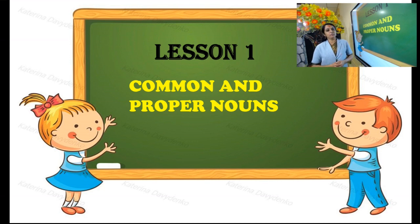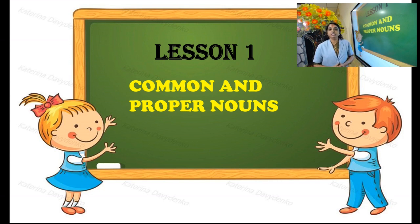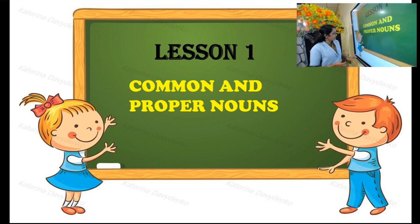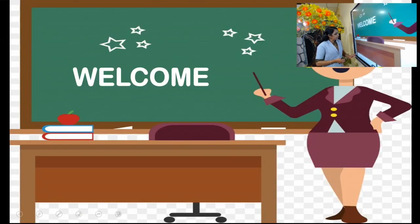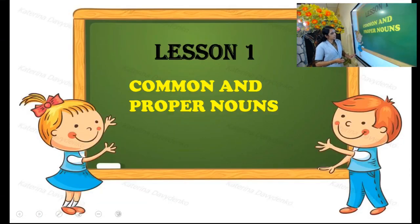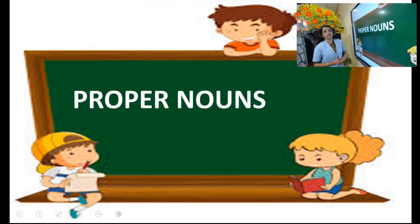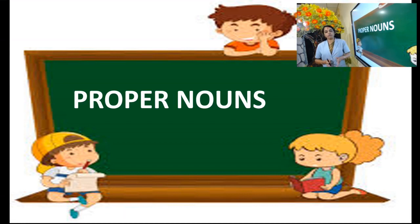So what is the naming word? It's a name given to a particular person, place, animal, thing, etc. Everything that is around us has a name, so that is called a naming word or a noun. In the last class we dealt with common nouns, and today we are going to find out what a proper noun is. Before that, let us recap what a common noun is.